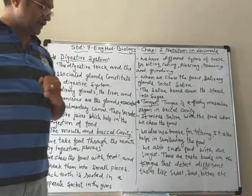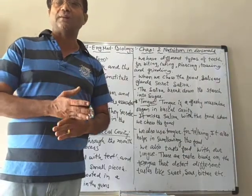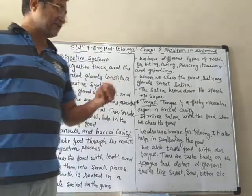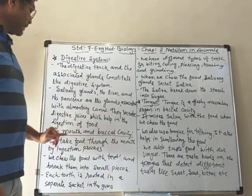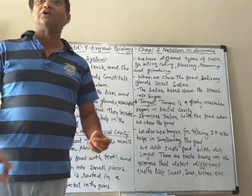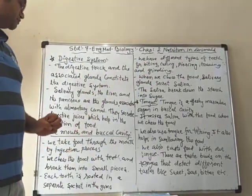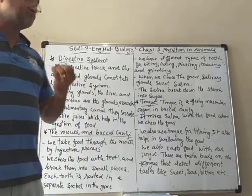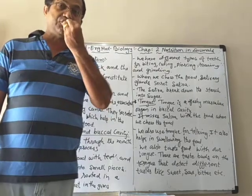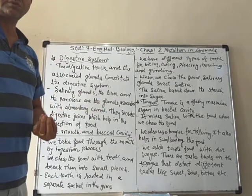Now one by one we have to learn about the different sections of the digestive system. We start from the buccal cavity — the mouth and the buccal cavity. In our mouth we start eating; we take the food and put it in the mouth, which is also known as ingestion.